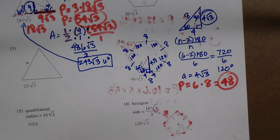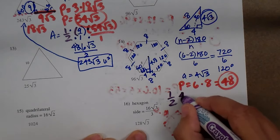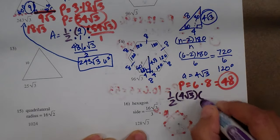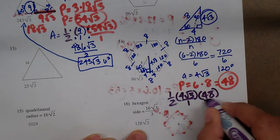Now I'm going to do the area. I have 1 half my apothem, which is 4 square roots of 3 over 1 times my perimeter, which is 48.